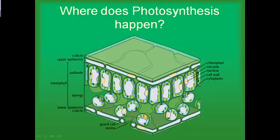Another quick thing to note: this is the bottom of the leaf. On the bottom side of the leaf we have these things called stomata. The stomata are where extra water leaves the leaf, and also where carbon dioxide comes in through these tiny little holes. We talked about this a bit in sixth grade when we discussed transpiration — where water leaves the plant and goes into the atmosphere through these tiny holes called stomata.